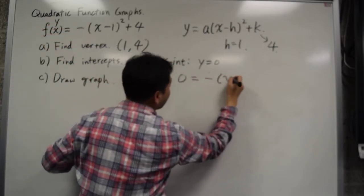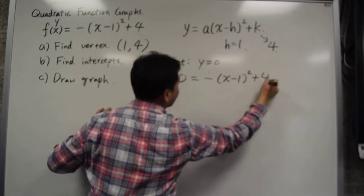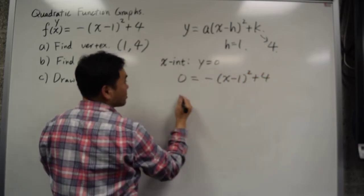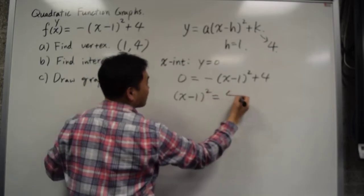0 equals to negative x minus 1 squared plus 4. Move this to the other side. You get x minus 1 squared equals to positive 4.